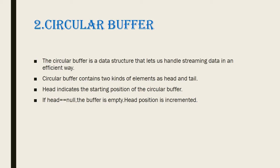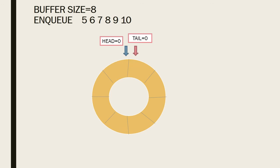The second component is the Circular Buffer. A circular buffer is a data structure used for handling streaming data in an efficient way. It consists of two elements: head and tail. Head indicates the starting position of the circular buffer; if head equals 0, it means there is no data present — the buffer is empty. Now consider a circular buffer of size 8, meaning we can store 8 values.